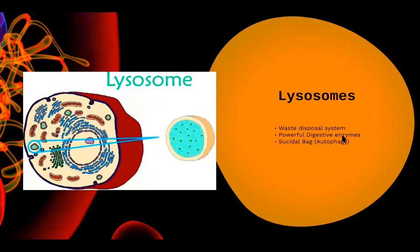In all those cases where cell material gets ruptured or becomes non-functional, everything goes to the lysosome. So the lysosome collects the garbage and gets rid of it, because of the presence of its powerful digestive enzymes. These digestive enzymes are what make the lysosome so effective at breaking down waste.